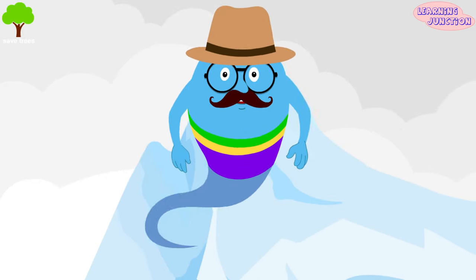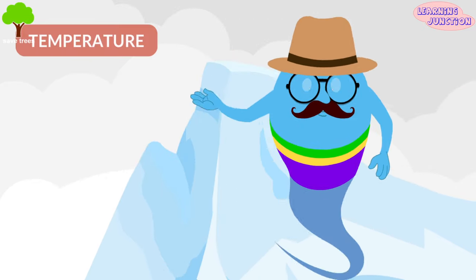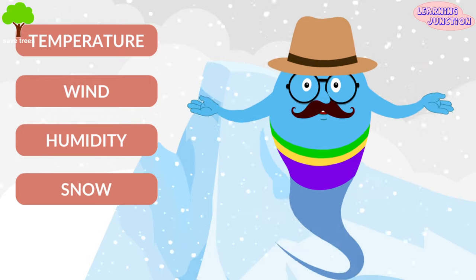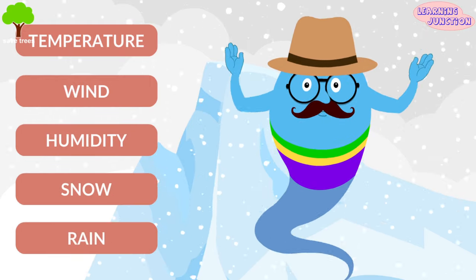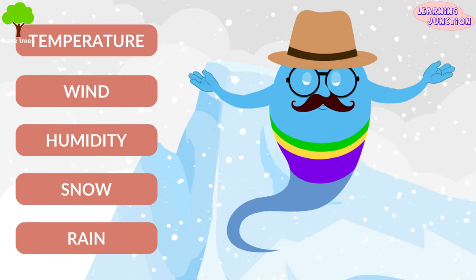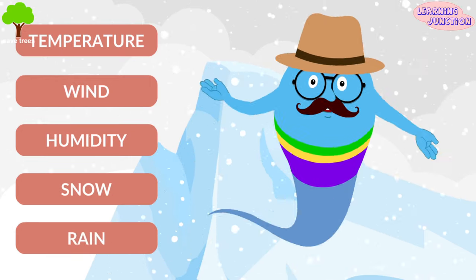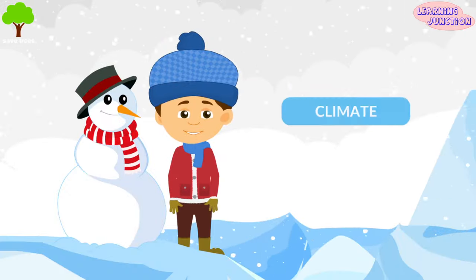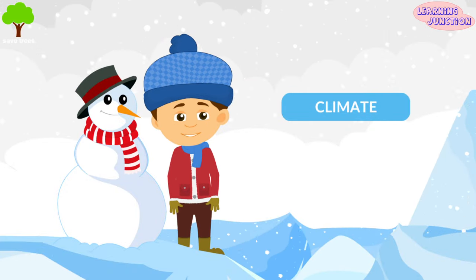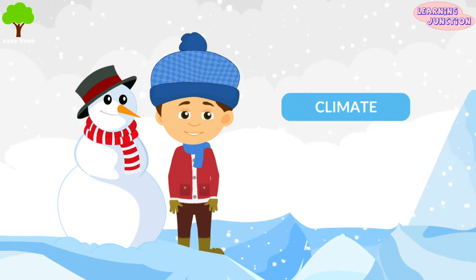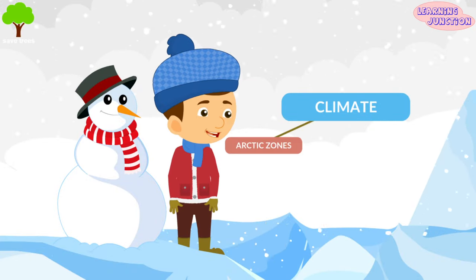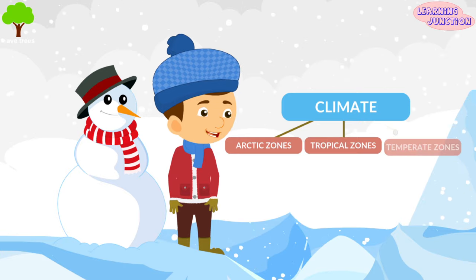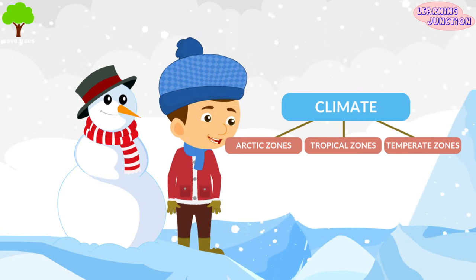Climate is the usual condition of temperature, wind, humidity, snow, and rain in an area of the Earth's surface for a long time. Climate is divided into three main groups: Arctic zones, tropical zones, and the temperate zones.